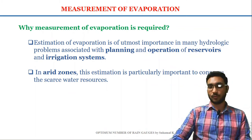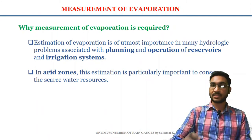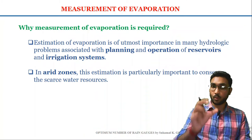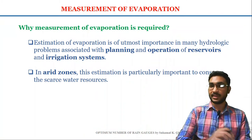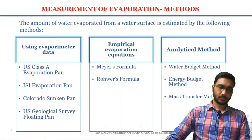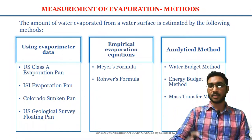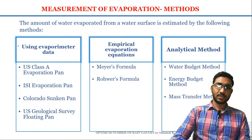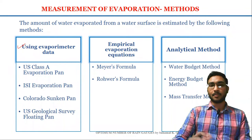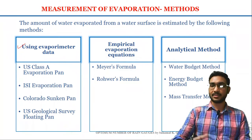For arid zones where the amount of rainfall is very less, the estimation of water loss due to evaporation is particularly very important. There are three methods in which we can estimate or measure the evaporation. The first method is using evaporometer data — by using the pan evaporometer, we can estimate the amount of water loss from a water surface due to evaporation.